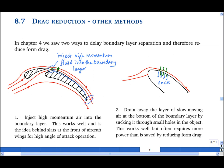Another way to achieve the same effect, which is to bring high momentum fluid in from the free stream, is to trigger turbulence in the boundary layer such that the boundary layer itself pulls in high momentum fluid from the free stream.